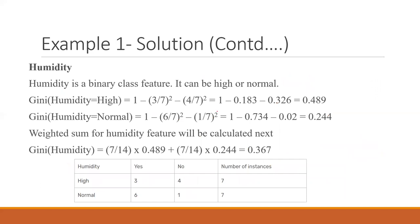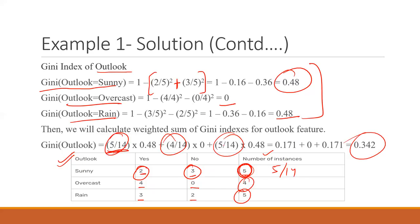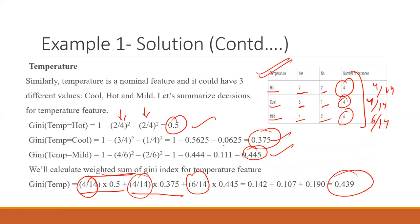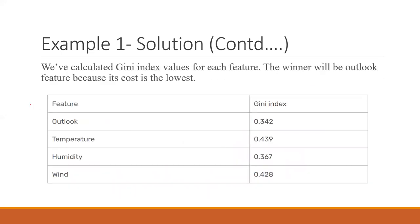Similarly, weighted Gini is calculated for outlook using weights 5/14, 4/14, and 5/14. Humidity and wind are also calculated in the same way. The resulting Gini index table shows: outlook = 0.342, temperature = 0.439, with humidity and wind having their respective values.